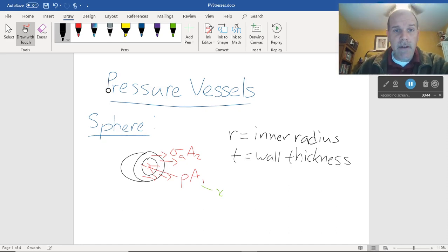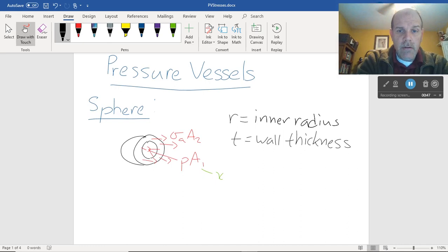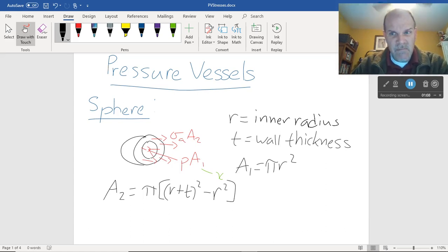I think it becomes pretty apparent that a1, that inner area, is pi r squared. a2 is technically equal to pi times r plus t squared minus r squared. And I could go through some math and actually it's not hard math because r plus t squared is just r squared plus 2rt plus t squared. So that's pi r squared 2rt t squared.